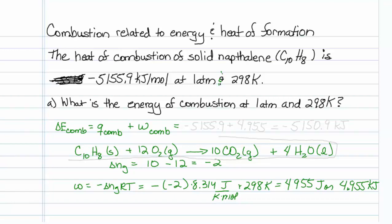Back to this equation. The heat of combustion is minus 5155.9 kilojoules. The work is plus 4.955 kilojoules. When we add those two together, we have a minus 5150.9 kilojoules. That's our energy change of combustion.